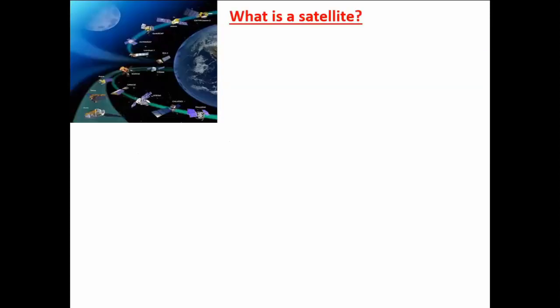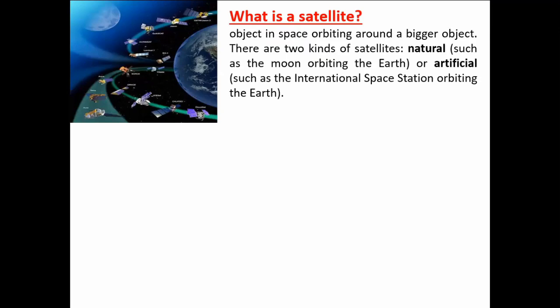First, let's start off with what a satellite is. When we talk of a satellite, we are referring to an object that orbits around a bigger object. We have natural and artificial satellites. The natural satellites, for example, are moons — the moon revolves around the planet. On Earth, there is one moon that revolves around it, and that is a natural satellite.